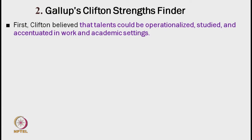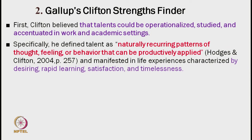After knowing about character strengths and virtues reported by Peterson and Seligman, let us know two more models about character strengths and how we have certain types of strengths which can develop such character strengths and virtues. This is our third model. Let us start with the second model, the Gallup-Clifton Strengths Finders model, which talks about talents.